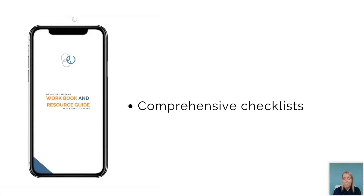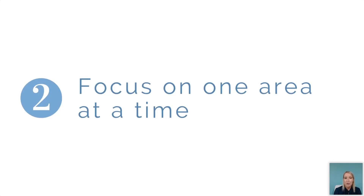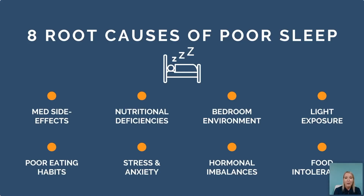I've done this myself with my daughter who doesn't sleep so well, and it's improving all the time. The other option is to focus on one area at a time. We know there are eight root causes of poor sleep, so you could go through and say: I need to look at medication, nutritional deficiencies; I've done bedroom environment and light exposure, but haven't worked on my diet very well, or maybe my hormones are out of balance.